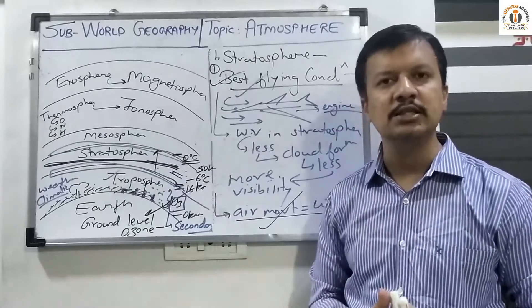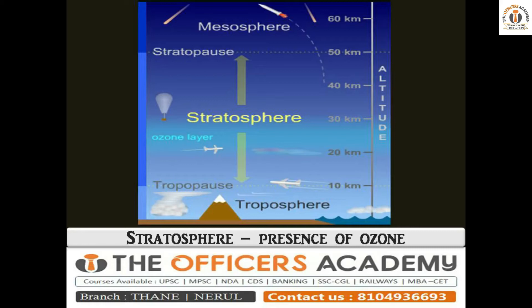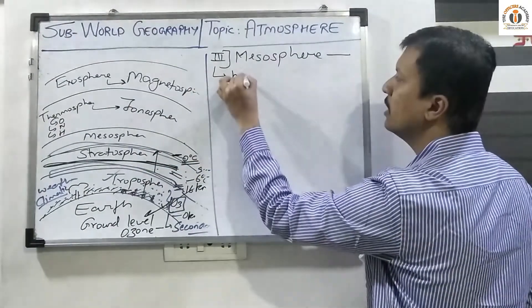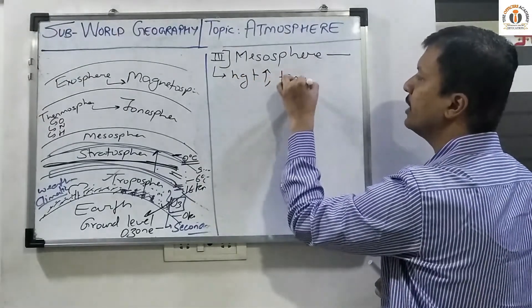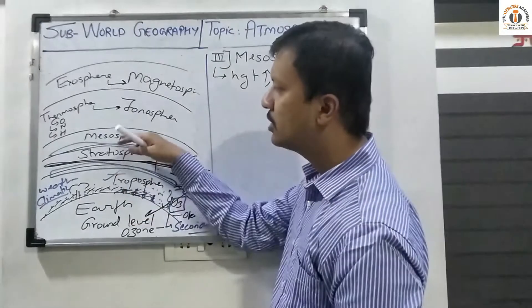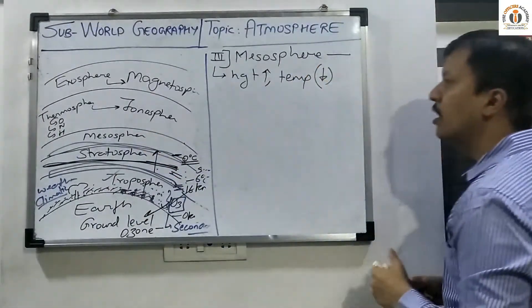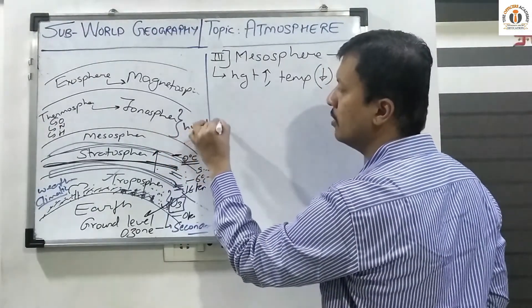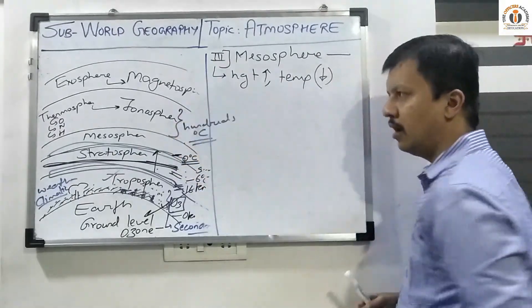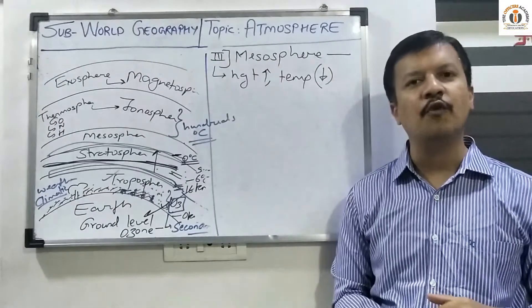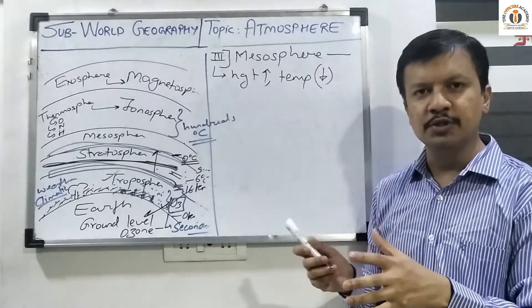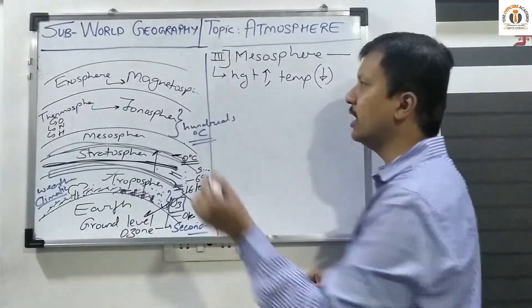Now let us study the properties of the third layer — the mesosphere. The first property of mesosphere: as height increases, the temperature falls down. However, as we move away from the earth's surface in general, the temperature is increasing to very high levels — in the ionosphere layer it goes to hundreds of degrees centigrade.